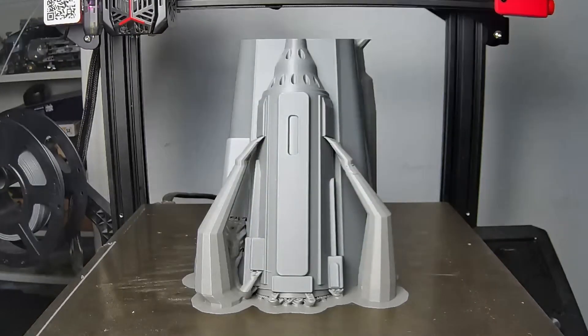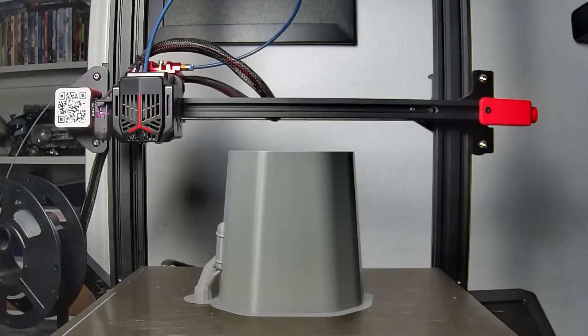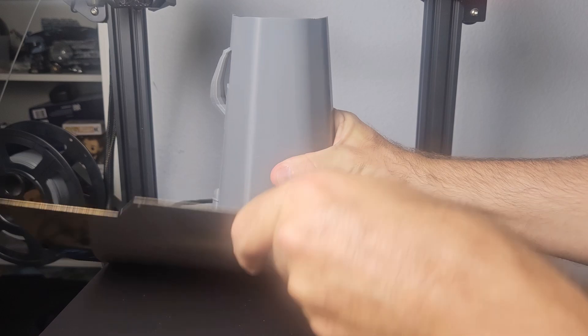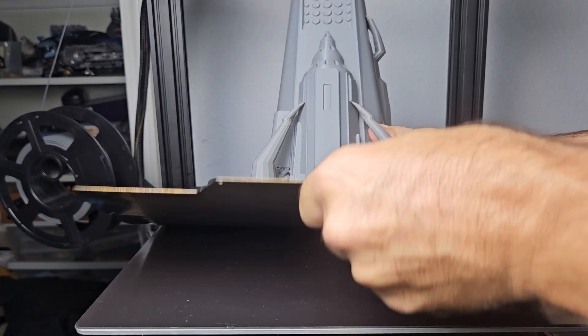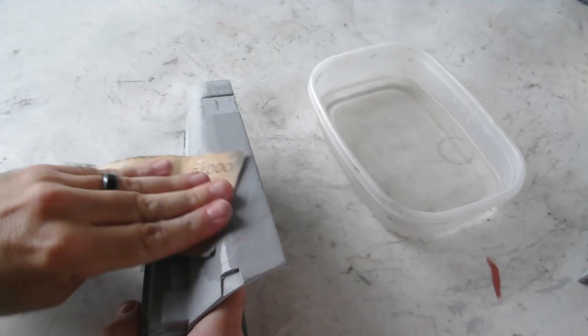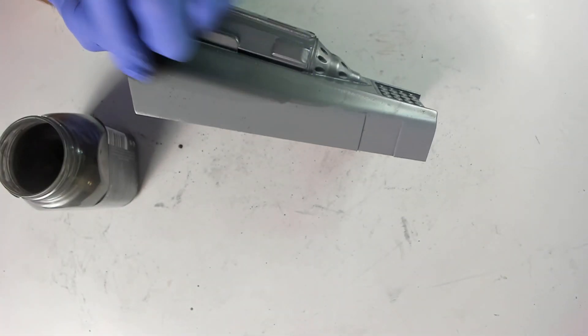On to the left gauntlet. After splitting the part in two, I print each half. And again, the process of smoothing out the part before painting. Then I paint, add the clear coat, and the graphite powder.